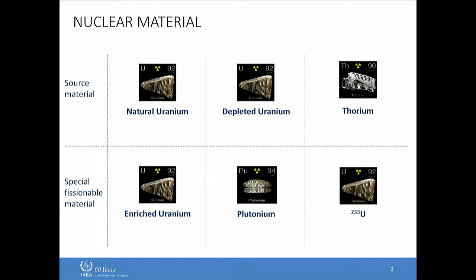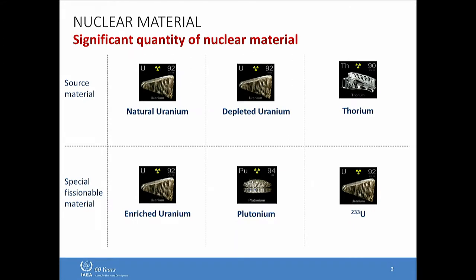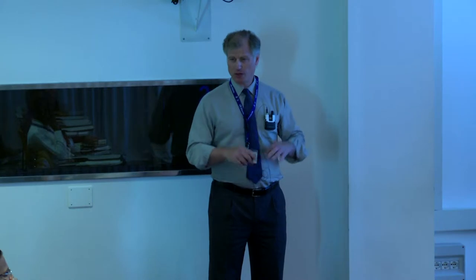Special fissionable material — you can make a bomb out of it directly if you have the right amounts. There's a term we call significant quantity: essentially how much nuclear material you need to make a nuclear explosive device, or where it can't be ruled out. For source material, we're talking tons — natural uranium requires 10 tons, depleted uranium 20 tons (basically two large UF-6 cylinders), and thorium is also 20 tons. For special fissionable material, the significant quantities are much lower — for plutonium, it's only 8 kilograms, and uranium-233 is the same.